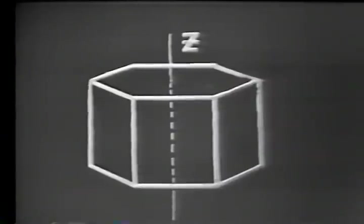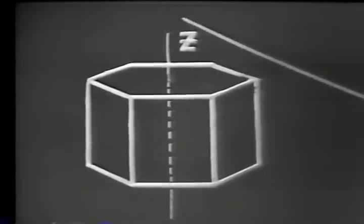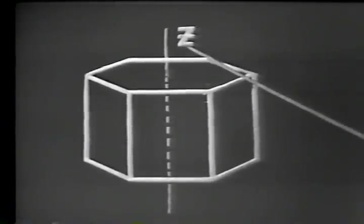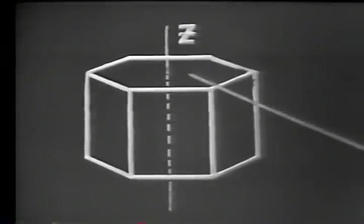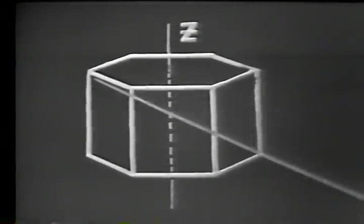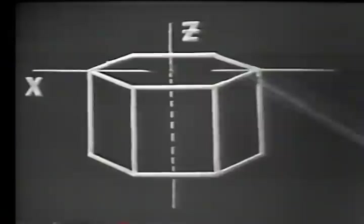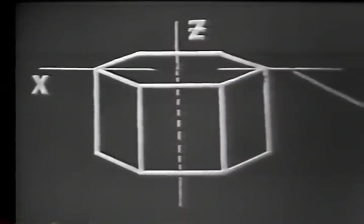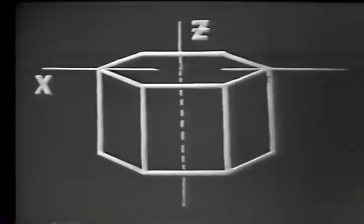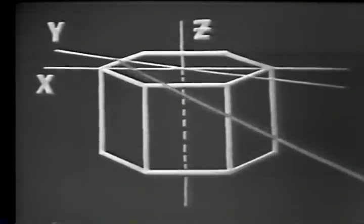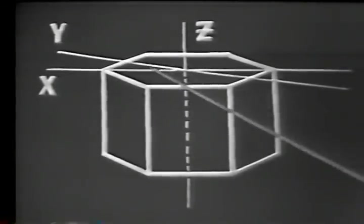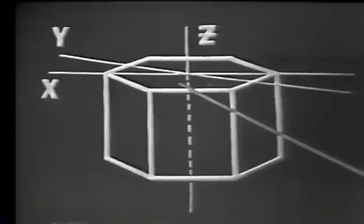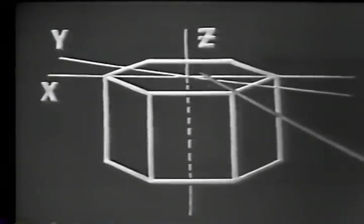The axis passing from point to point — or end to end — directly through the crystal is known as the Z-axis. The axis passing through the corners of the crystal is known as the X-axis. While the axis perpendicular to the faces of the crystal is known as the Y-axis, going through the faces. These are only imaginary lines and are used as reference points when cutting the crystal.